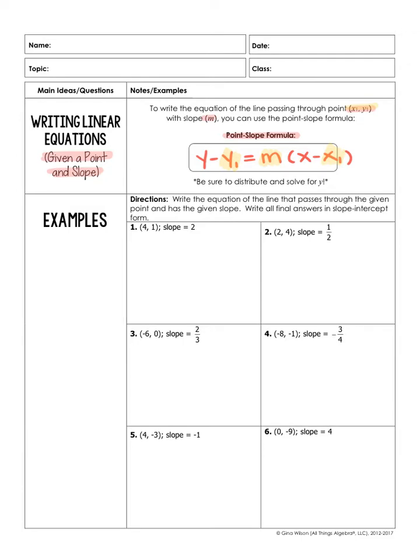So let's try an example. It says write the equation of the line that passes through the given point and has the given slope. Write all final answers in slope-intercept form. So all of our answers we're going to have to simplify and make it look like slope-intercept form, which remember is y equals mx plus b. So let's do this first example. It says we're given the point (4, 1) and a slope of 2. So first thing I would do is label your coordinate. You have x1 and y1, and then this is my slope, which we call m.